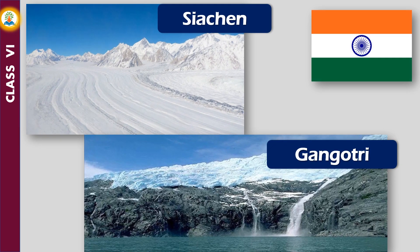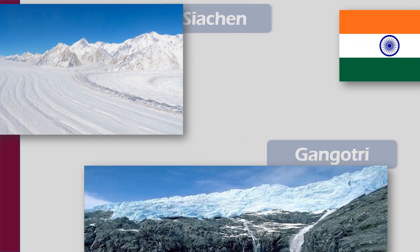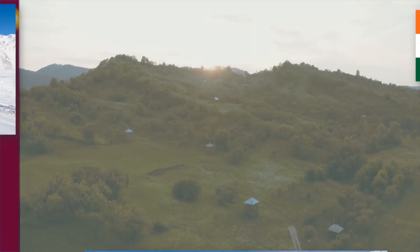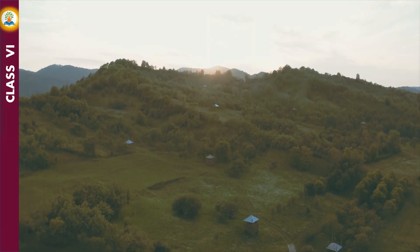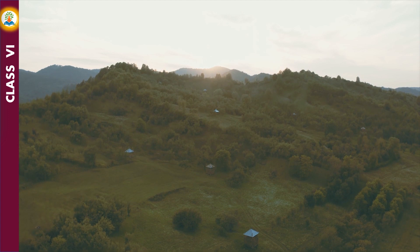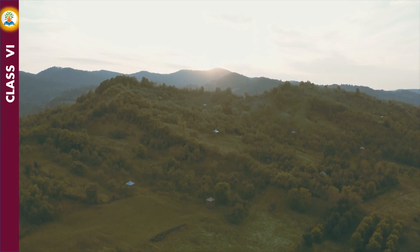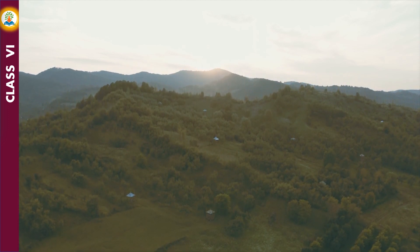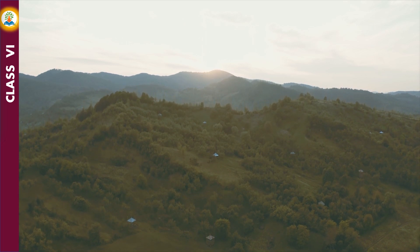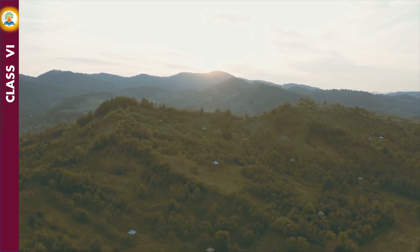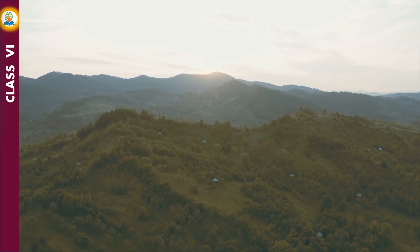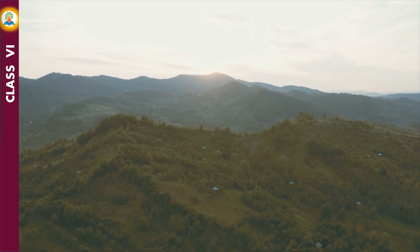In India, the Siachen in the Karakoram Range and the Gangotri in the Himalayas are two big glaciers. Mountain regions have scanty population because steep slopes, lack of agricultural land, lack of transport facilities, and extreme cold climate make them unsuitable for human habitation.